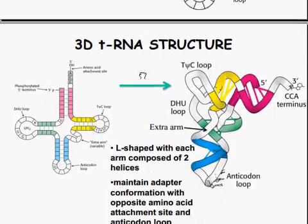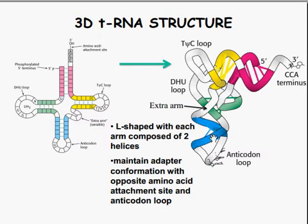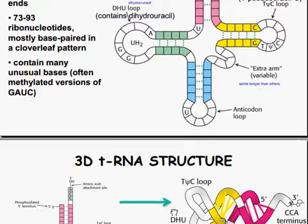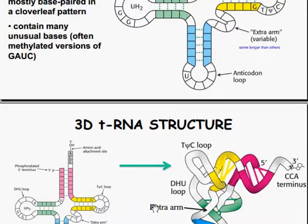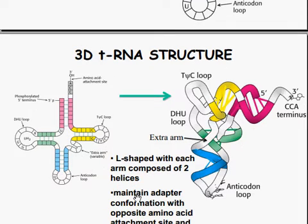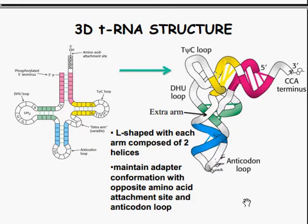Here is the 3D structure of the tRNA. It creates sort of an L-shape. There's the pseudouracil loop and the dihydrouracil loop. There is the extra arm as well. Each arm is composed of two helices. This maintains adapter conformation with the amino acid attachment site and anticodon loop on opposite ends.